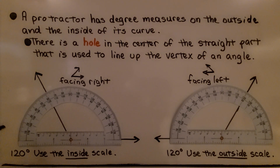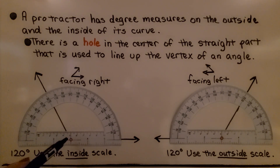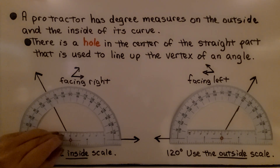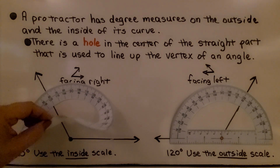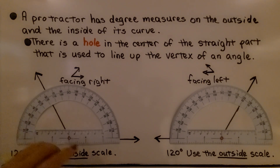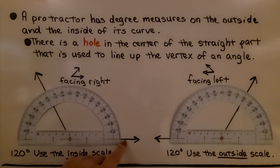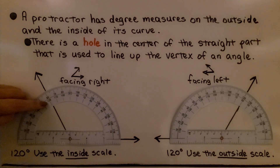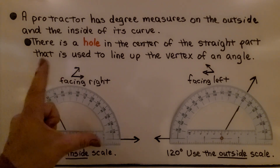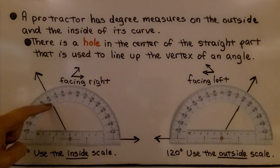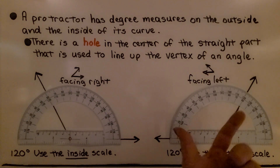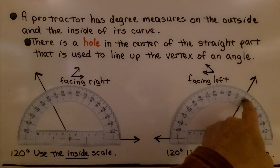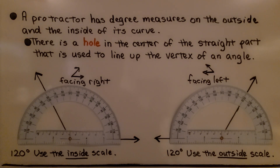A protractor has degree measures on the outside and the inside of its curve. There's a hole in the center of the straight part that is used to line up the vertex of an angle — that's where the vertex would be. We line the hole up on the vertex, then line up the base, and we can measure the angle. This is a 120 degree angle. We would use the inside scale here — see how there's a 60 up here but a 120 here. Because this angle is facing right, we use the inside scale. This other angle is facing left, so we use the outside scale — that is also a 120 degree angle using the outside scale.